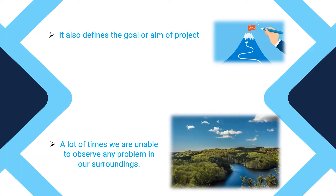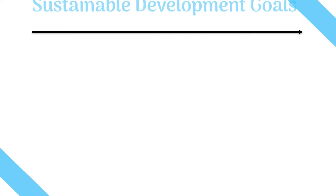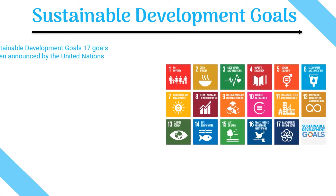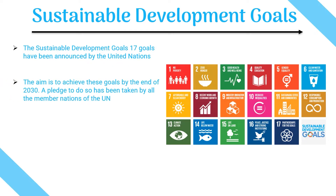A lot of times we are unable to observe any problems in our surroundings. In that case we can take a look at the Sustainable Development Goals. The 17 goals have been announced by the United Nations, termed as Sustainable Development Goals. The aim is to achieve these goals by the end of 2030. A pledge to do so has been taken by all 193 member nations of the United Nations. We have created another video on SDGs in detail and the link will be provided in the description.